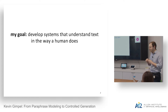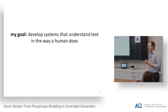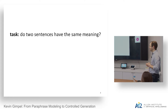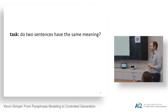My goal is to develop systems that understand language and text the same way a person does. I'm not necessarily interested in superhuman performance, but I care about understanding how people write text for other people. If we want to understand what people mean when they write, our systems should try to understand it the way a person does. One step in that direction is to work on the task: do two sentences have the same meaning?